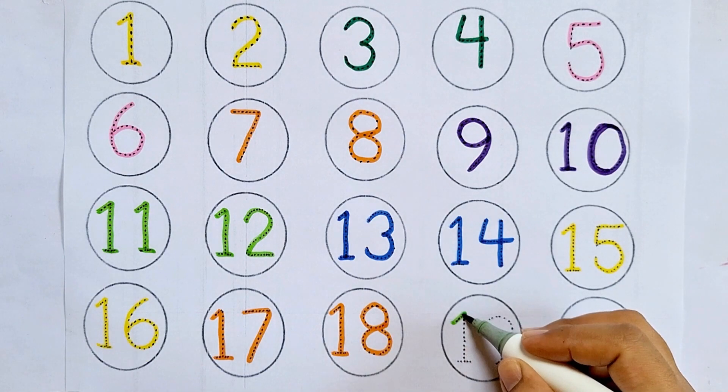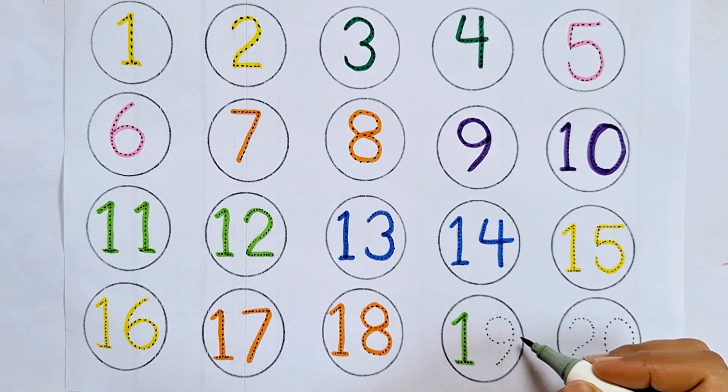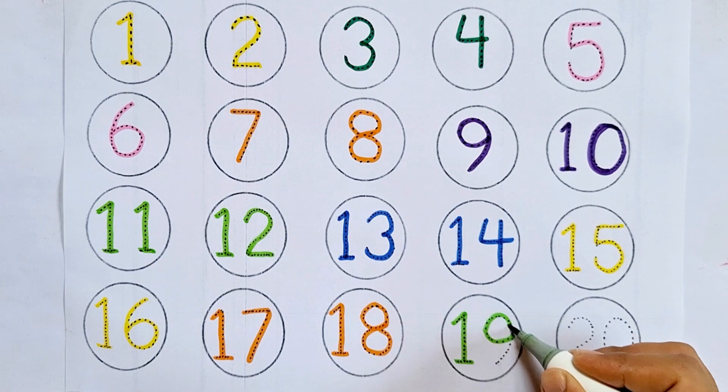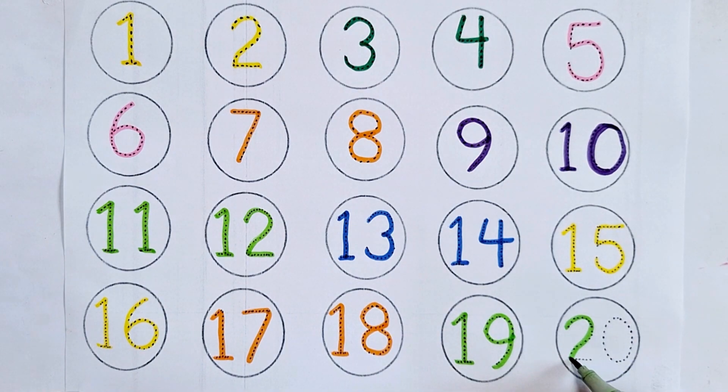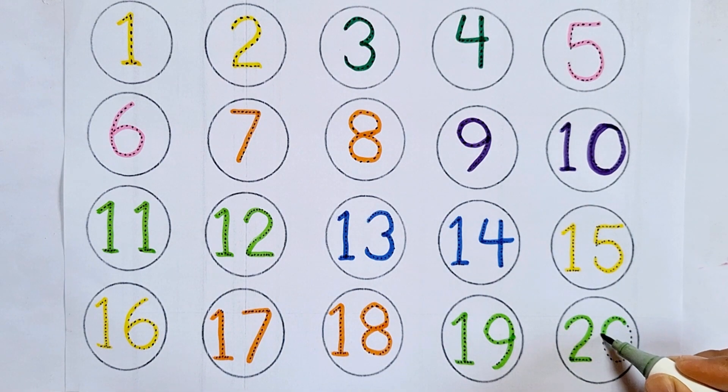Nineteen, this is nineteen. One, nine, nineteen. Twenty, this is twenty. Two, zero, twenty.